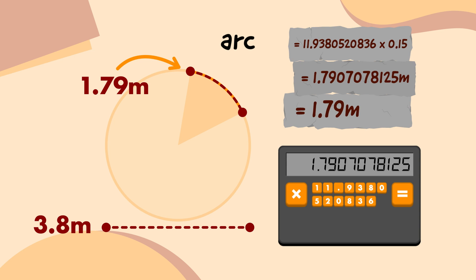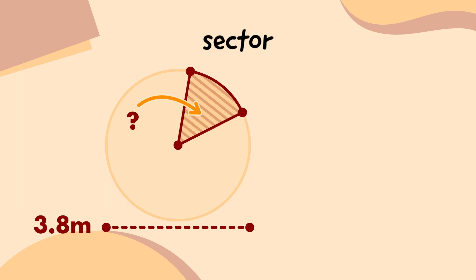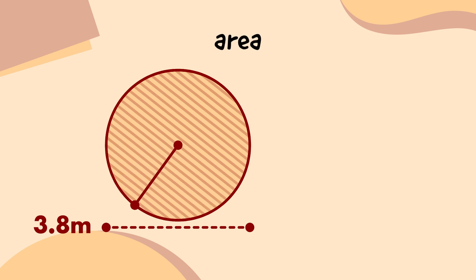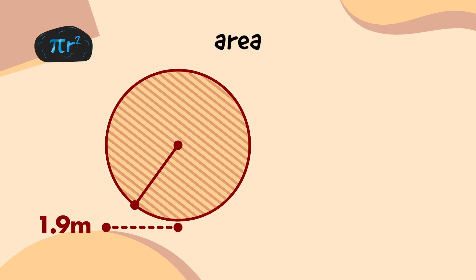Next, I'll work out the area of the sector that the vines cover. To do that, I first need to work out the area of the whole emblem, which is pi r squared. If the diameter of this emblem circle is 3.8 metres, and the radius is always half as long as the diameter, that means the radius of this circle is 1.9 metres.